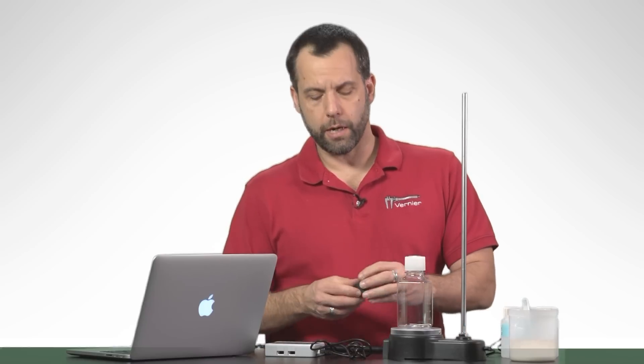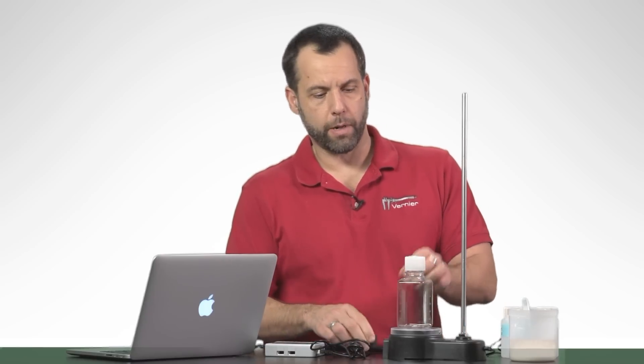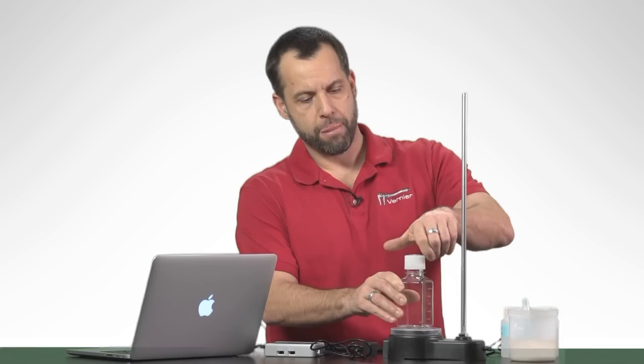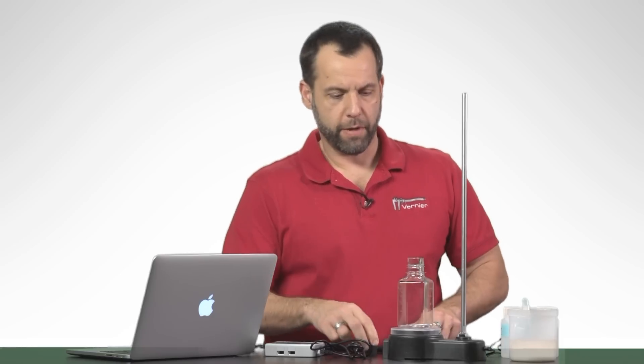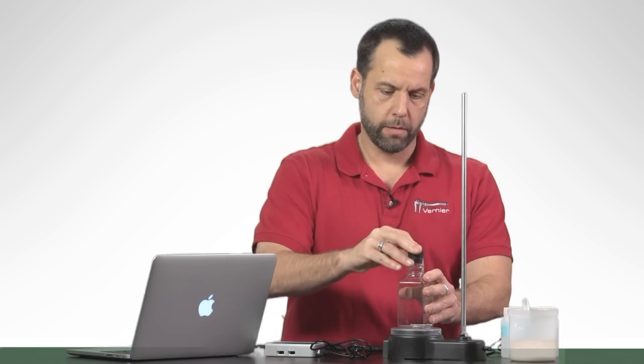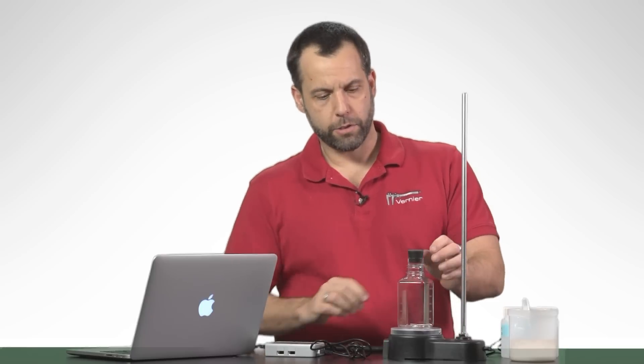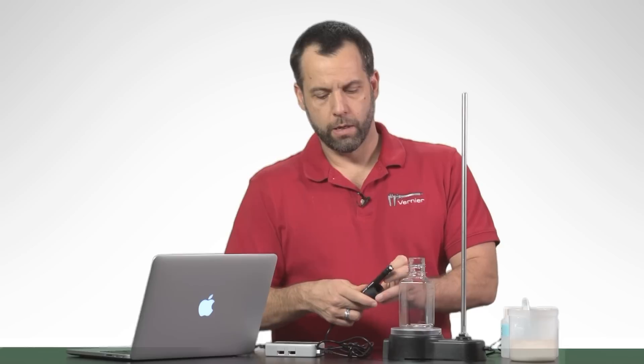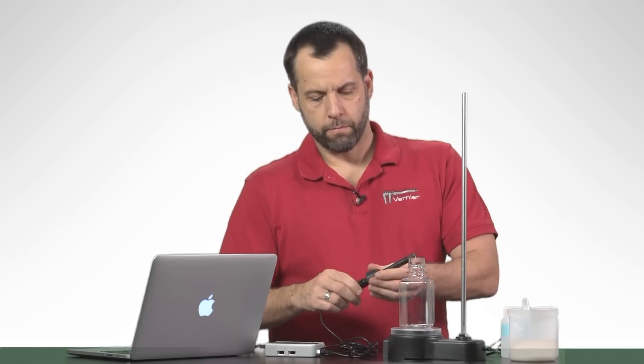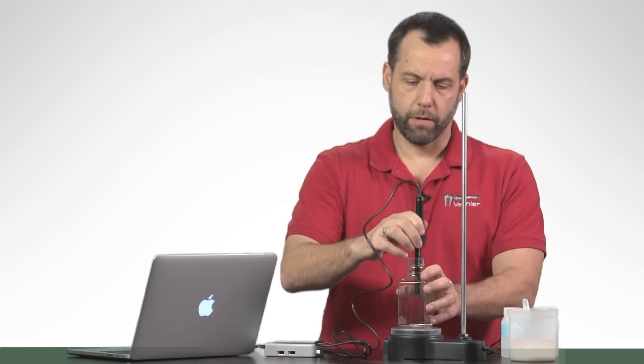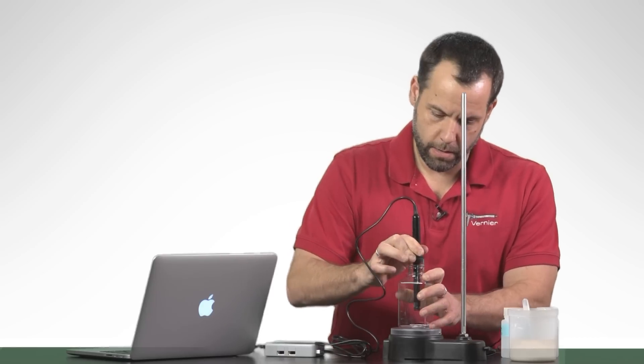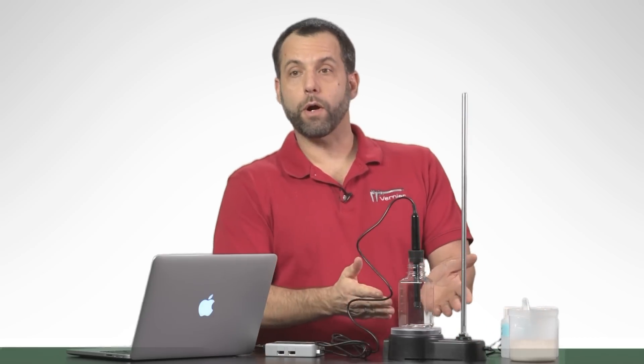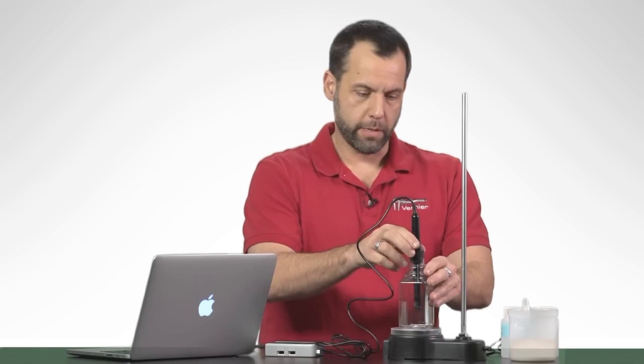The other thing that we're going to need is a little stopper, the split stopper. The split stopper fits right in the top of the Nalgene bottle. What's really nice is when we place the ethanol sensor into the Nalgene bottle, you can see that it will fit right down in it, and we don't have to worry about it actually getting wet or anything like that. So I'm going to take this out now.